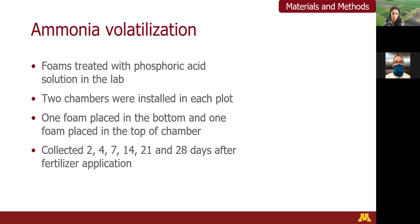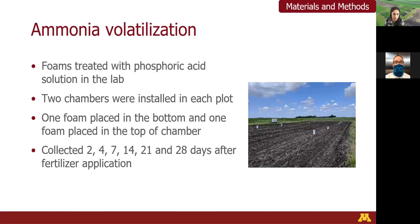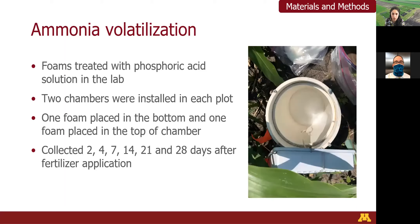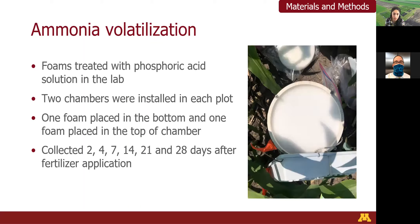For ammonia volatilization, which we started collecting in 2019, we used foams treated with phosphoric acid and glycerol to trap the ammonia. Two chambers were installed in each plot on the same day of pre-plant fertilizer application and planting. One foam was placed in the bottom of each chamber to capture soil ammonia and another in the top to capture ambient ammonia. The bottom foams were collected and replaced 2, 4, 7, 14, 21, and 28 days after each fertilizer application.